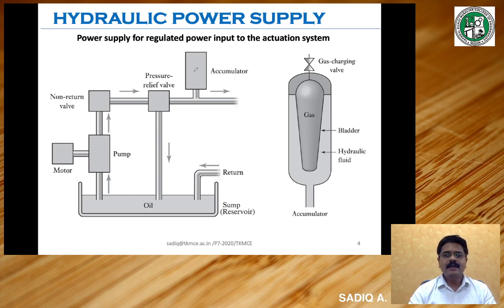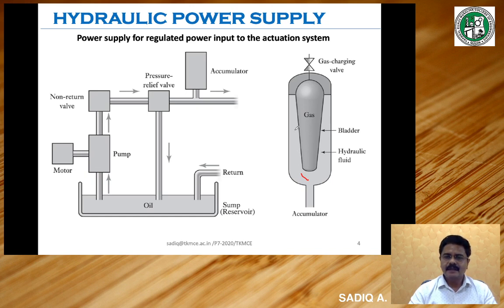There is an accumulator provided in the supply line. The accumulator is a simple container having a bladder filled with gas at a particular pressure. When fluid comes into the line, it rushes into the accumulator cabin and compresses the bladder so that more liquid is held inside. Whenever the pressure in the external circuit is reduced, the bladder pushes the liquid back to the line. In either way, there is regulated fluid flow to the external circuit. So regulated power supply of hydraulic fluid is provided by means of hydraulic power supply.